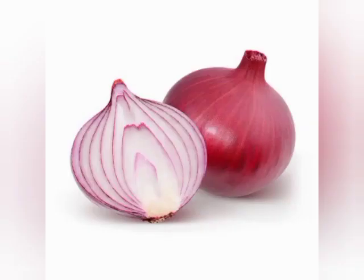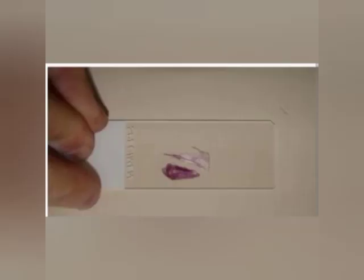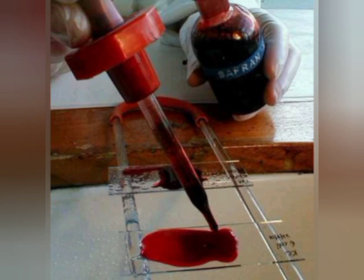Take an onion, cut it, and carefully take one peel of onion by using a forcep and keep this onion peel on the slide. After that, add one drop of safranine onto the onion peel.